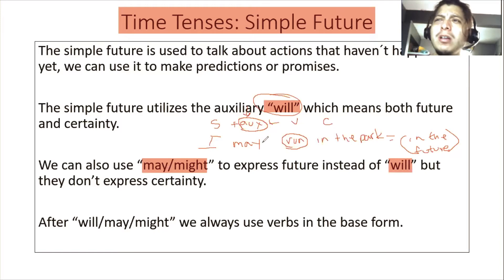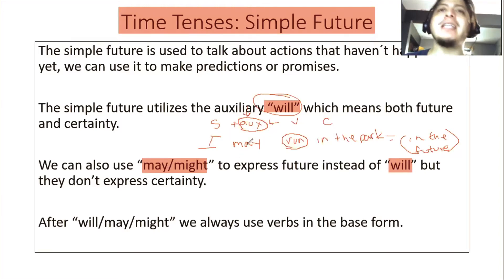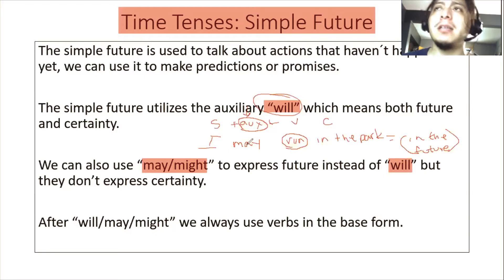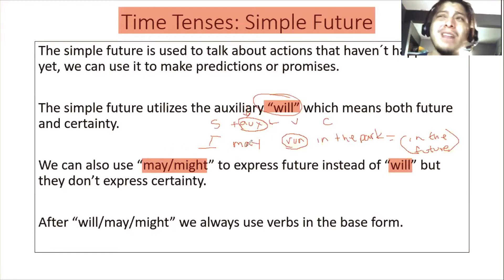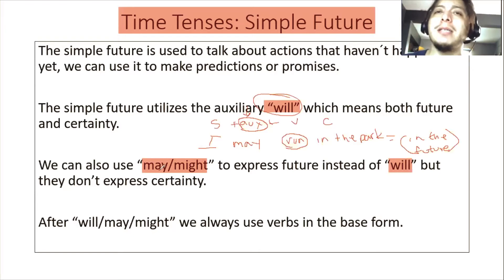So 'I will run' is like saying 'voy a correr' or 'correré' — it's like a promise. It's something that will happen in the future and there is certainty. If you say 'I may run' or 'I might run,' it means 'yo tal vez corra' — there is future, but no promise.